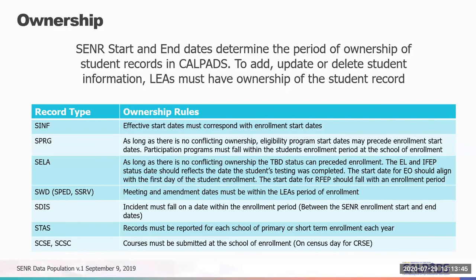While you can see a longitudinal view of the student's entire history in CALPADS, you can only affect those records which you own. Each record type has its own processing rules based on ownership. For student information, the effective start and end dates must correspond within the enrollment start dates. For student programs, as long as there's no conflicting ownership from another LEA, eligibility program start dates may precede the enrollment start date. In some instances, program eligibility can be established prior to enrollment as long as there's no prior enrollment creating a conflicting period.